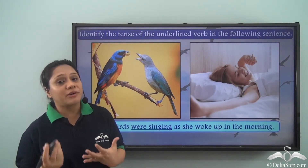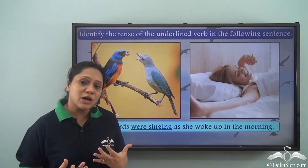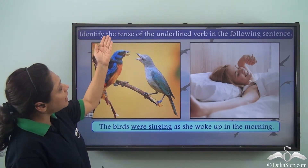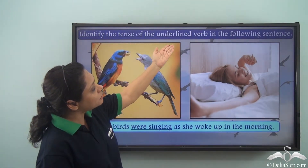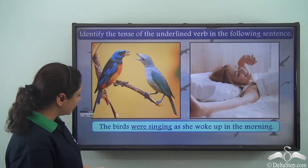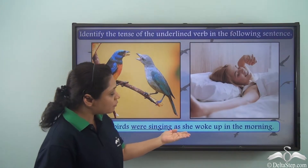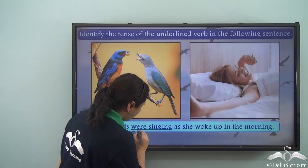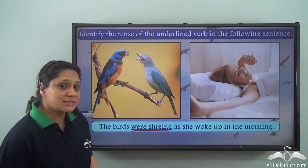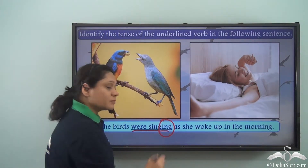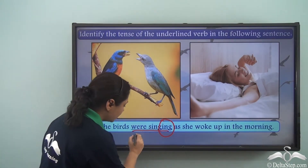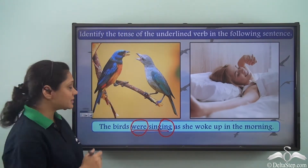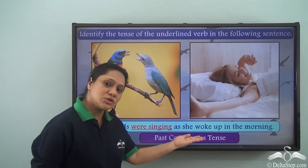Now that we have revised the different kinds of past tense, let us do some exercises. Identify the tense of the underlined verb in the following sentence: 'The birds were singing as she woke up in the morning.' The underlined verb is 'were singing.' We can see there is an -ing form with 'were,' so the verb 'were singing' is in the past continuous tense.